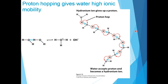Proton hopping also plays a role in biological proton transfer reactions. For example, in enzyme active sites where proton transfers happen, proton hopping is one of the phenomena. Proton hopping also happens in ion channels. That is why proton hopping is important and why it was introduced here.